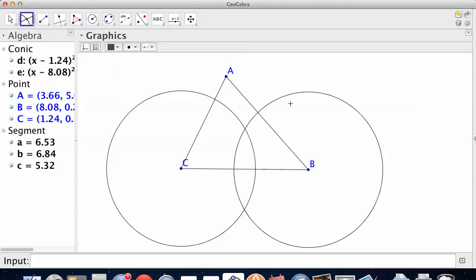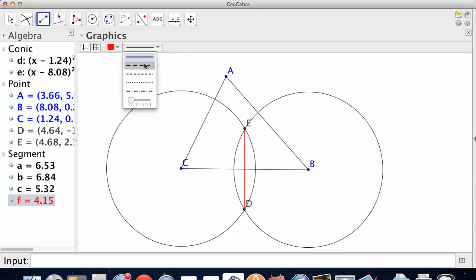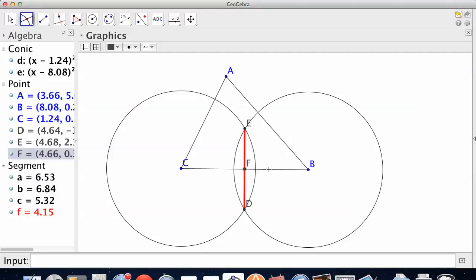Find the intersection of the circles. Connect the intersection of the circles where that intersection, the red line, is crossing the side of the triangle BC. Where ED is crossing BC is the midpoint. So we're going to find that. So click on that and that. So point F is the midpoint.